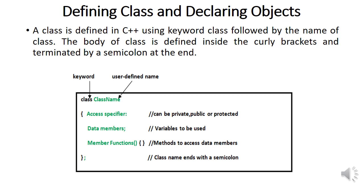For defining a class, you have to use the keyword 'class' before the class name. The class name can be a user-defined name. Inside the curly brackets you write the body of the class, which includes access specifiers, data members, and member functions.